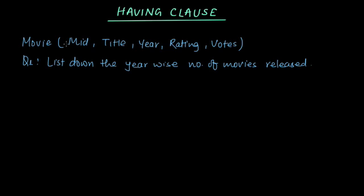So we have a Movie table in our database which has attributes mid, title, year, rating, and votes. Now write down the query for listing down the year-wise number of movies released.